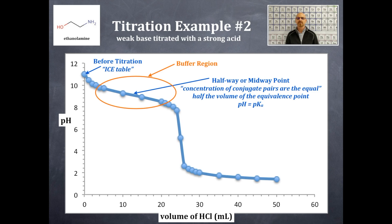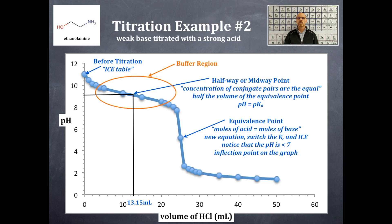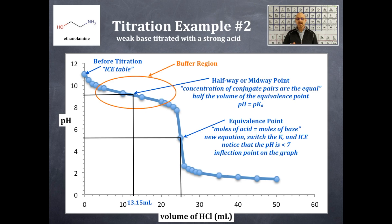Our third point is the equivalence point. The concept and math that drives this is that the moles of acid are going to equal the moles of base. A new equation is going to be written; you're going to switch the K and do an ICE table. Notice that the pH is going to be less than 7 in this case because you are titrating with a strong acid, and this equivalence point is the inflection point along the graph. For this particular titration, the equivalence point volume is going to be 26.3 milliliters of hydrochloric acid. The halfway or midway point is half that equivalence point volume, which would be 13.15 milliliters.